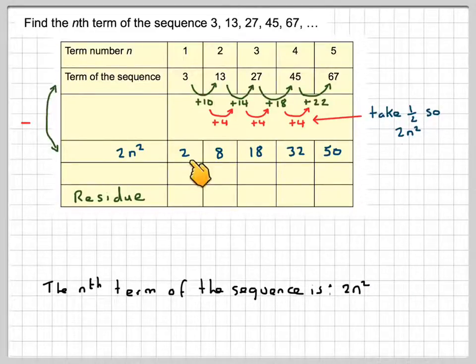So we're going to do 3 take away 2, which gives me 1. 13 take away 8, which gives me 5. 27 take away 18, which gives me 9. 45 take away 32, which gives me 13. And 67 take away 50 is 17.